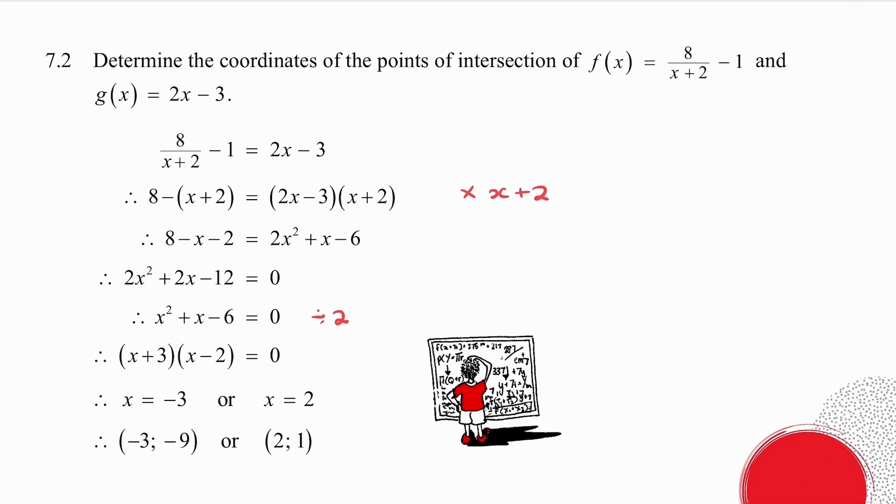Factorize. Either x plus 3 is 0. So I get x is minus 3. Or x minus 2 is 0. So I get that x is 2.